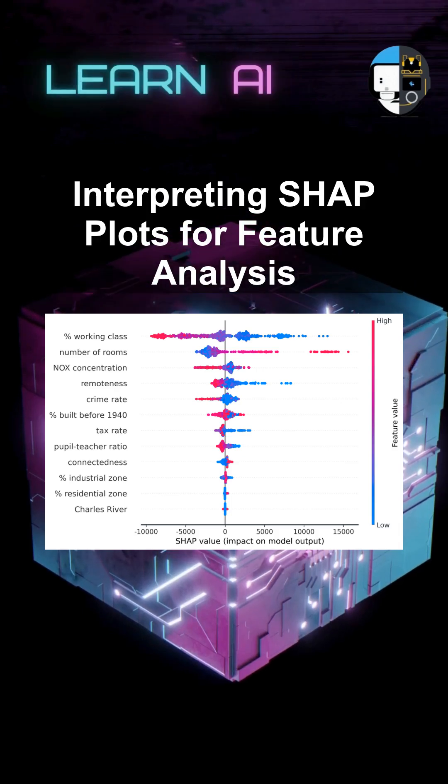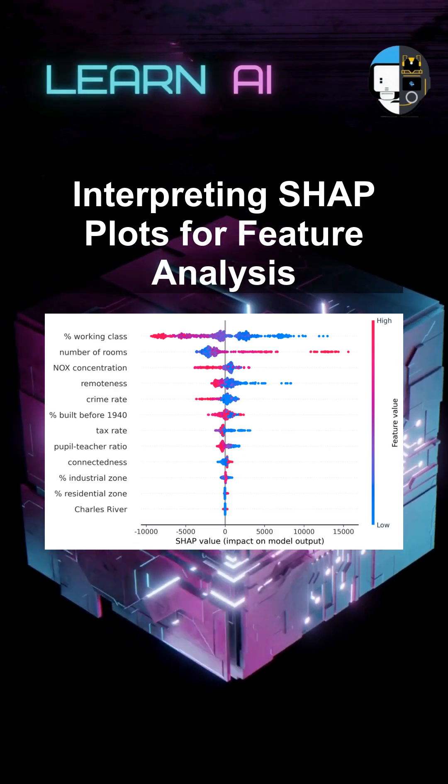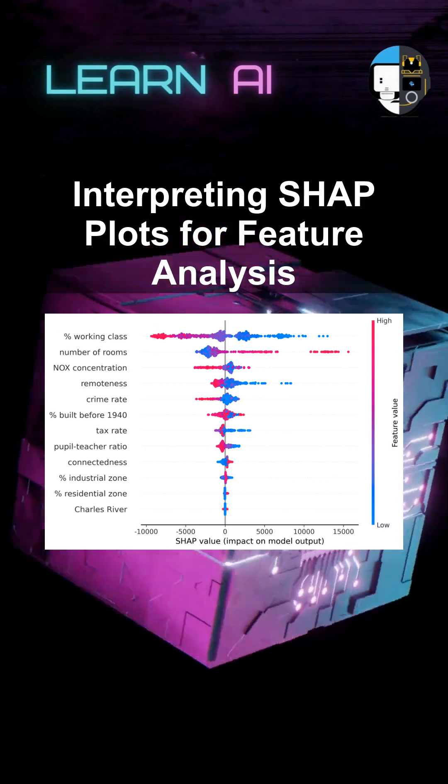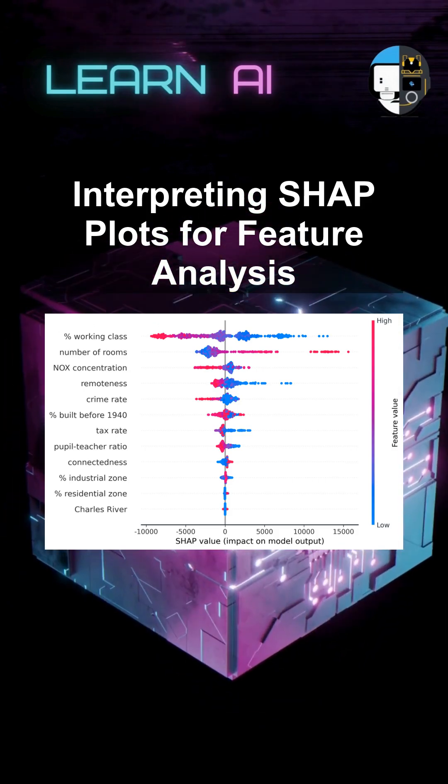SHAP plots are a powerful tool for interpreting the contributions of individual features in a model's prediction. There are several types of SHAP plots, each serving a unique purpose.